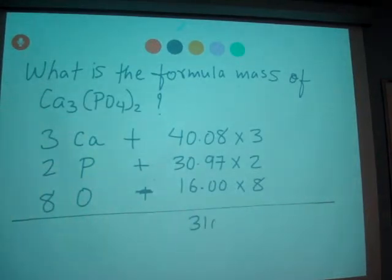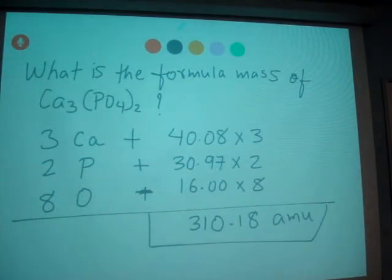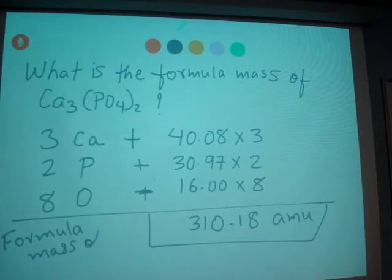You get 310.18 amu. So that's the formula mass of Ca3(PO4)2.